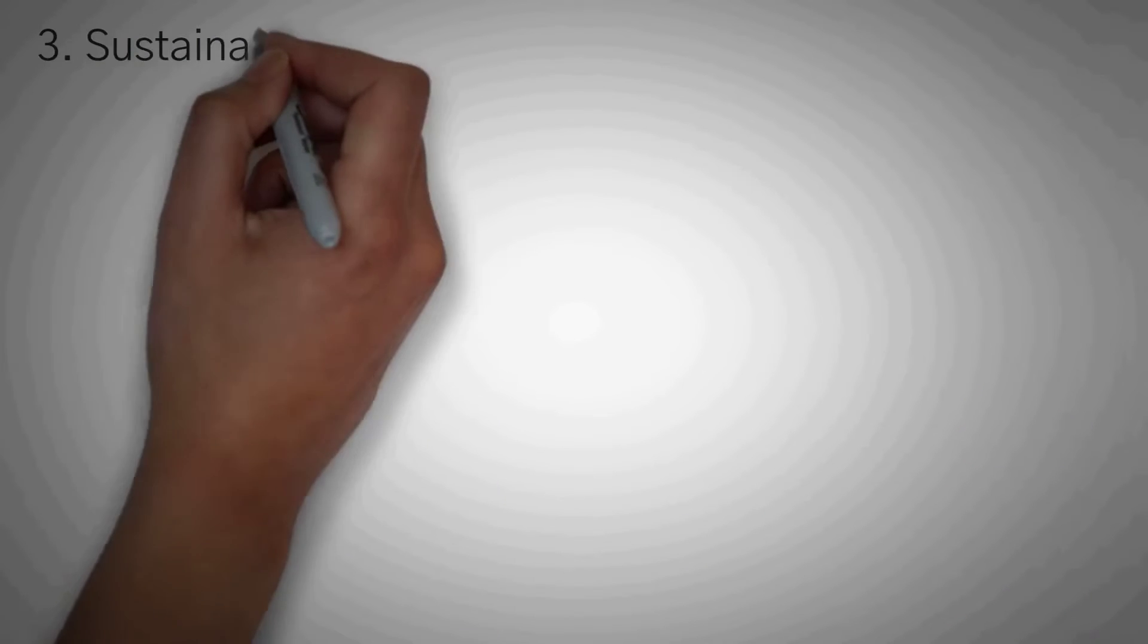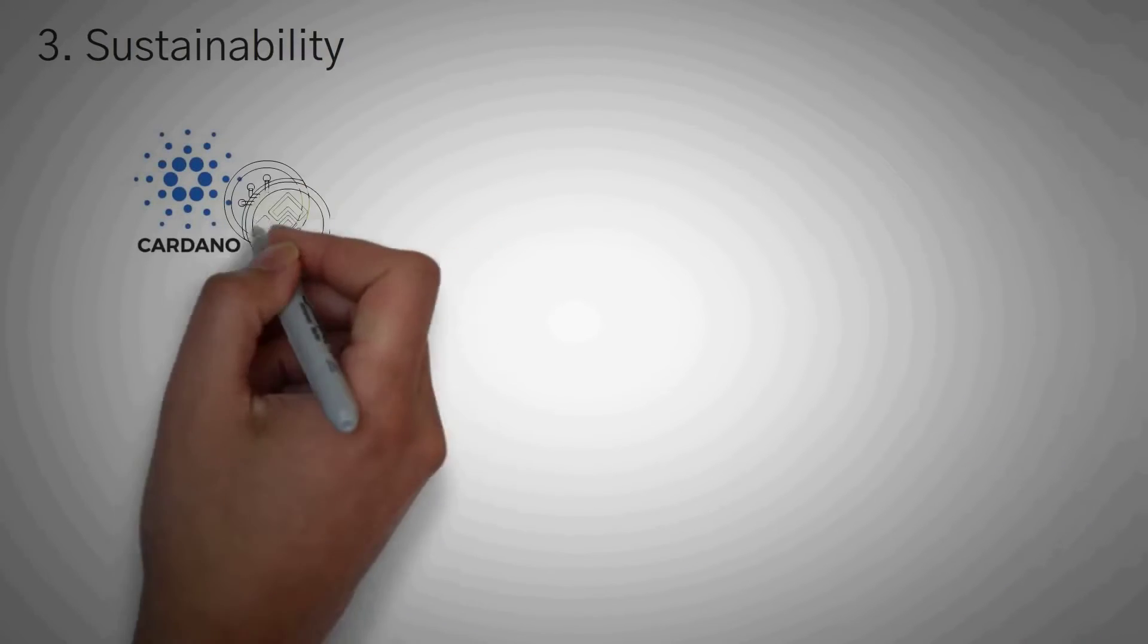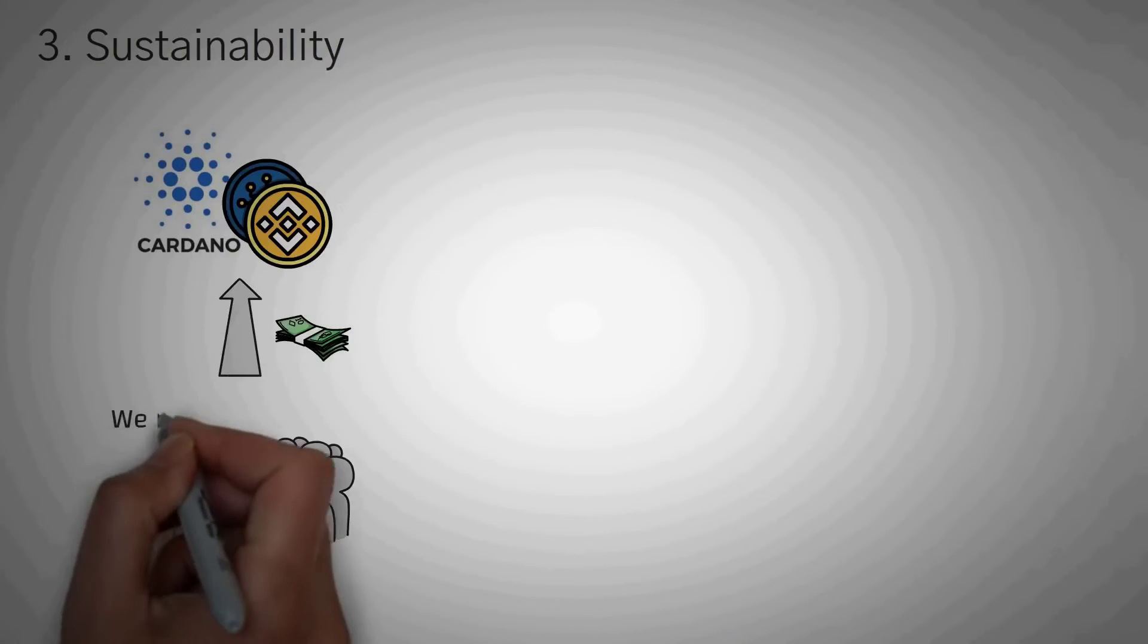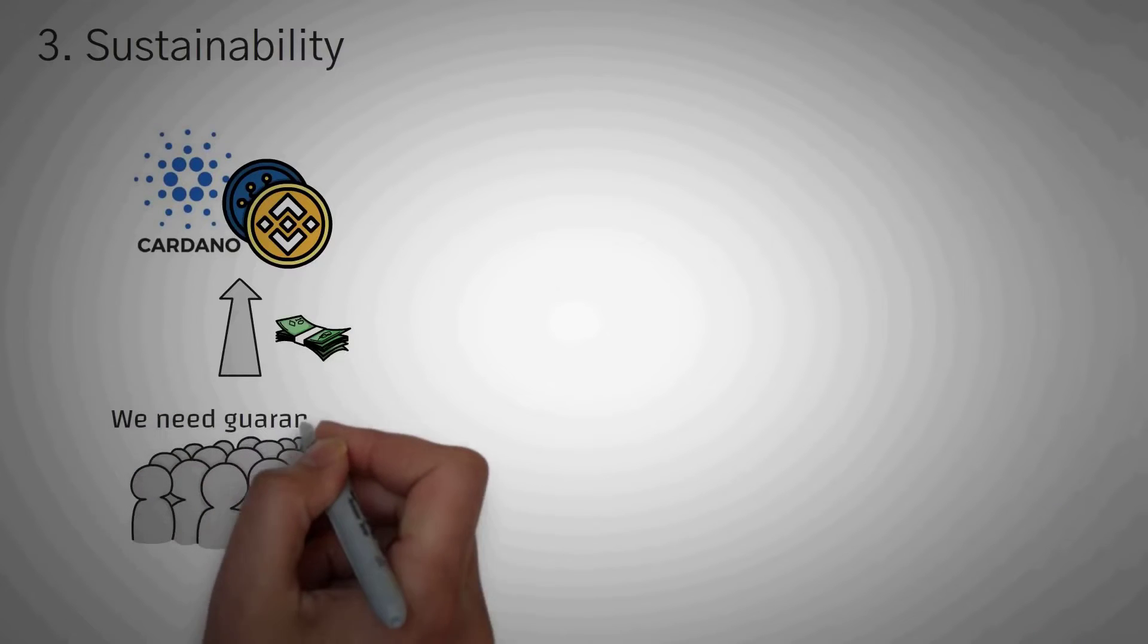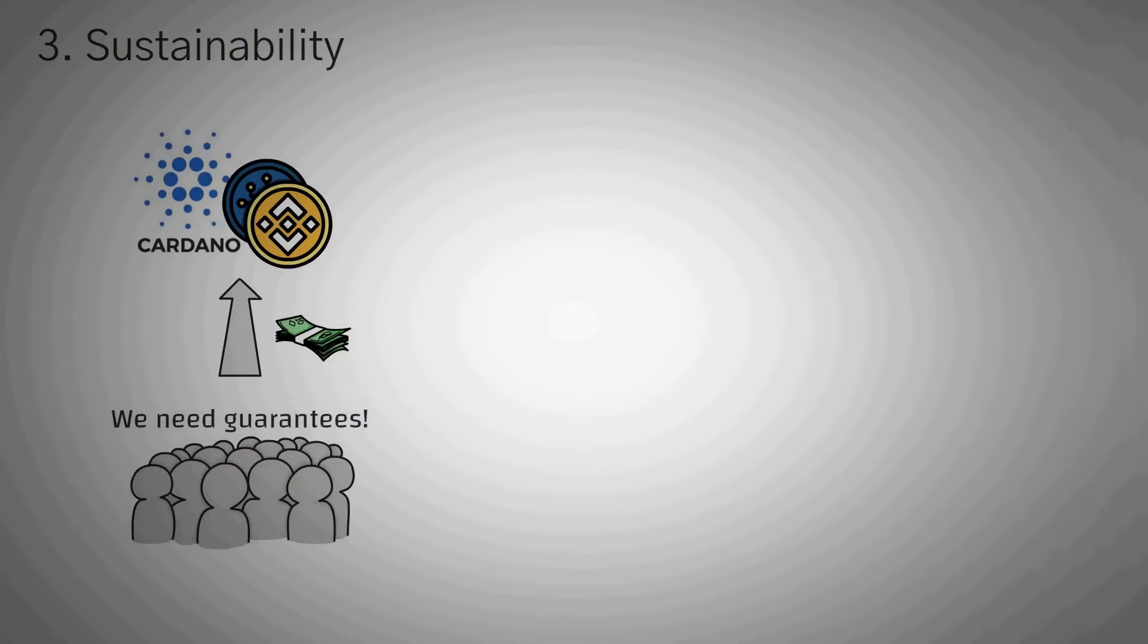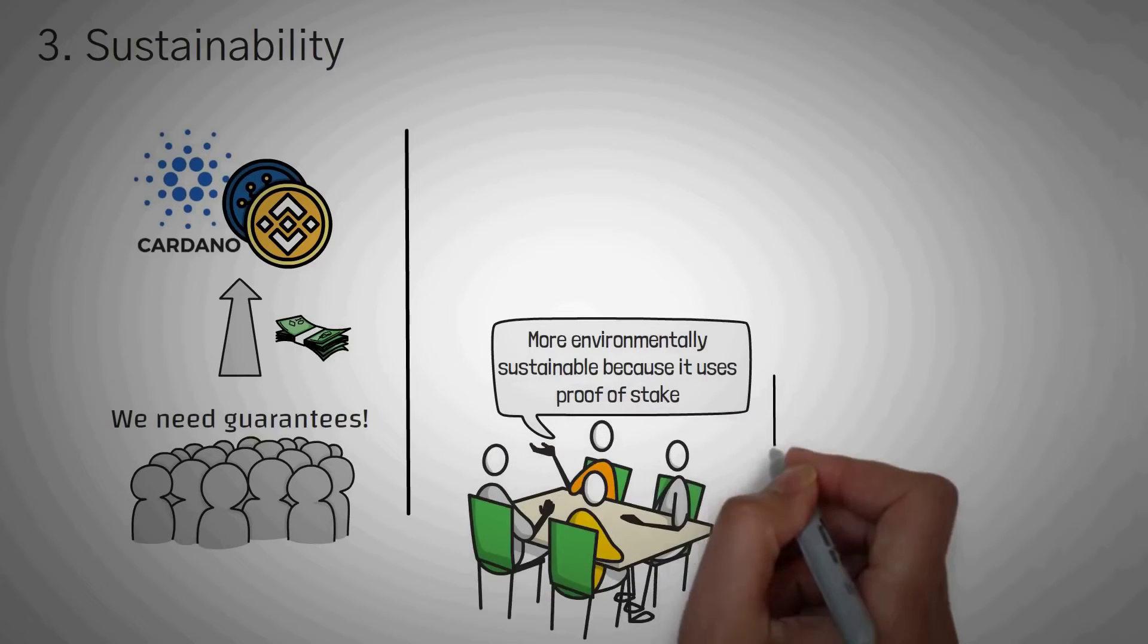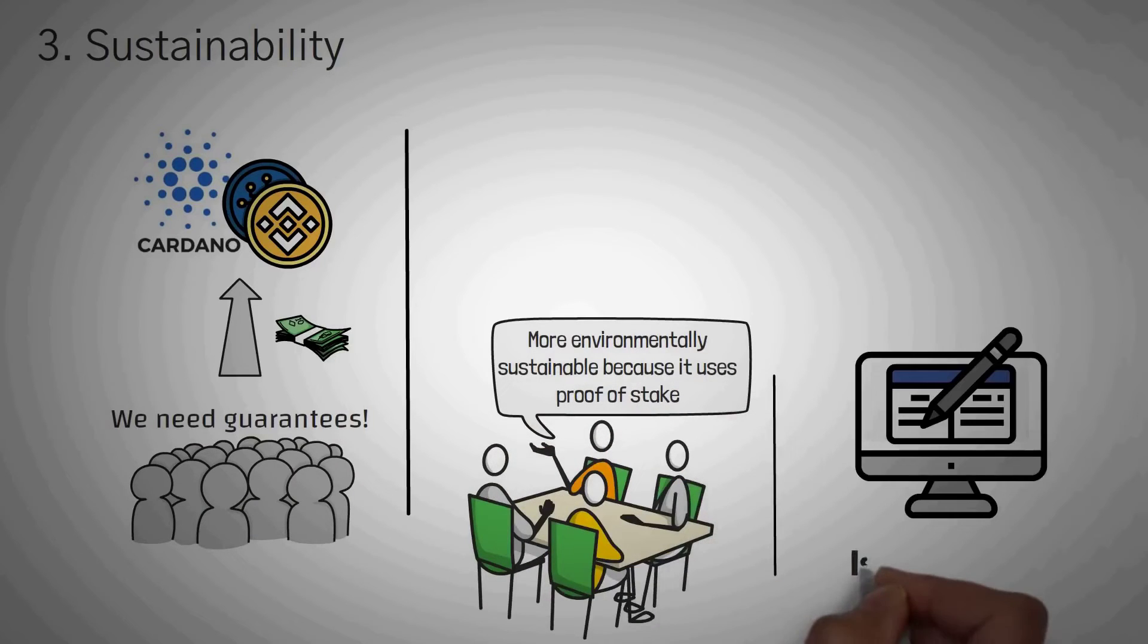The third problem is sustainability. Now, if Cardano or any other cryptocurrency is going to host much of our financial lives, obviously, we would need a way to guarantee that the system stays functioning. So when we say sustainable, we don't necessarily mean environmentally sustainable. Although many say that Cardano, because of its proof of stake instead of proof of work mechanism, is environmentally sustainable, there is a huge debate about environmentalism in the crypto world.